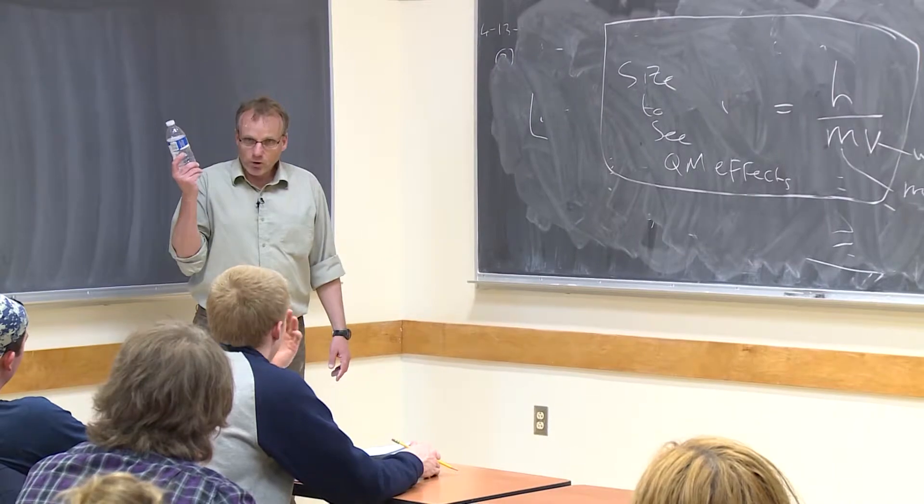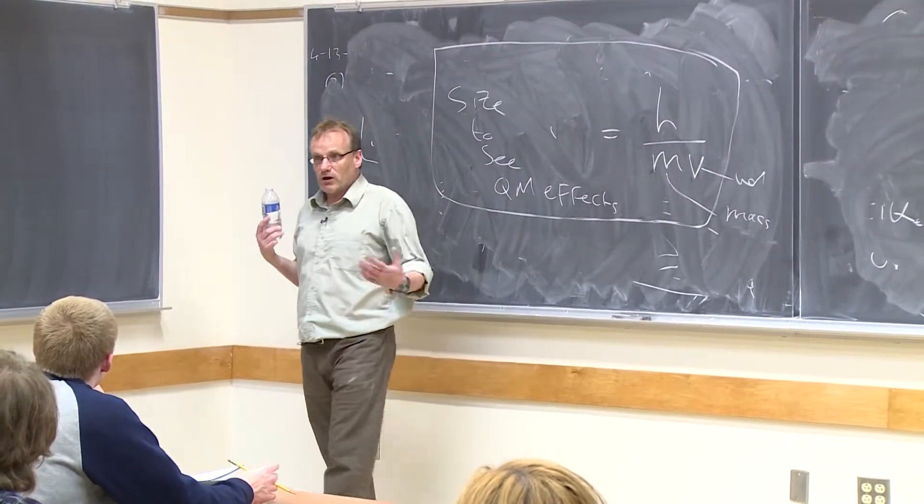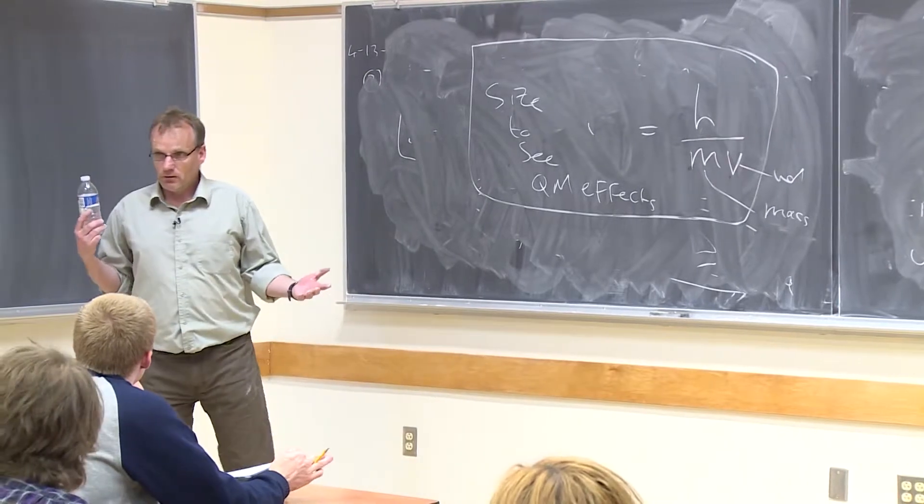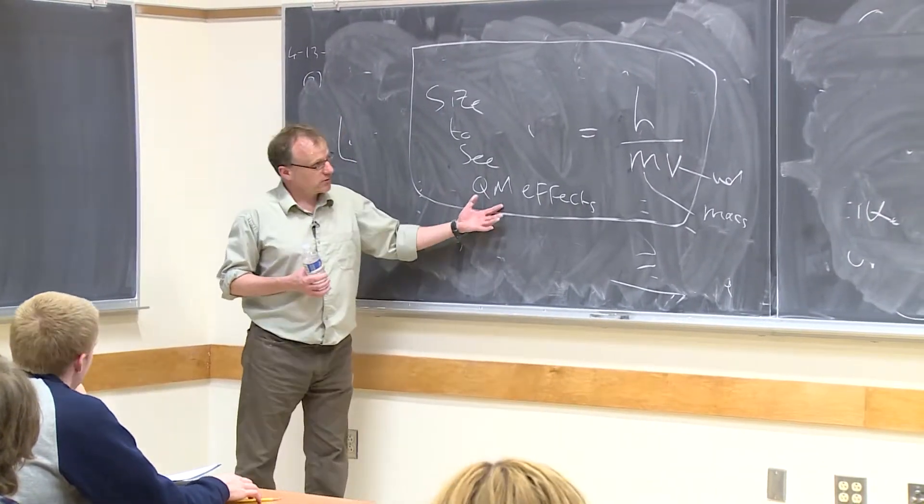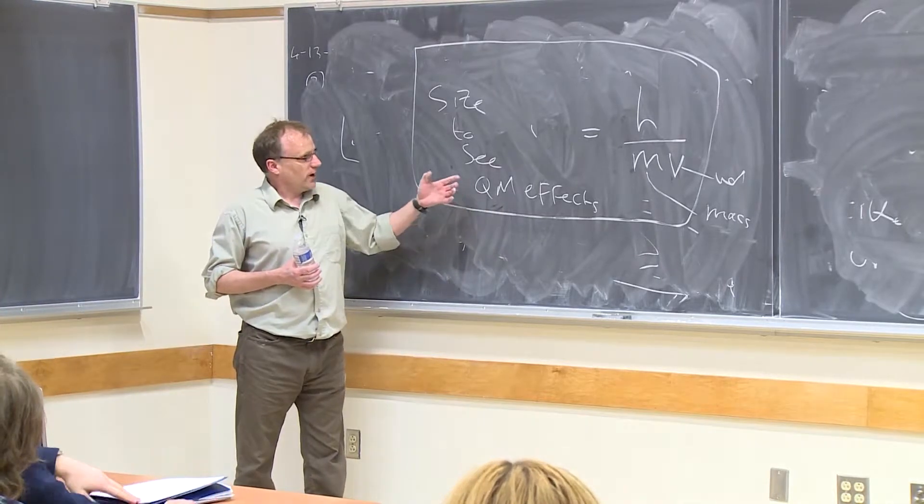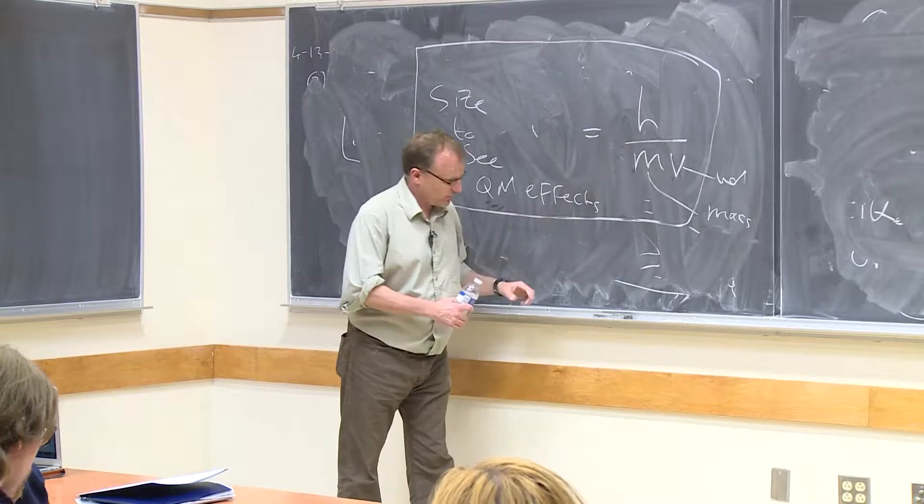But if you do it for something like a water bottle, you're going to end up with a number that's something like 10 to the minus 34. We can't see at that scale. So you can only see the quantum mechanical world if you have a device that can measure with this length scale. Let me give you an example.